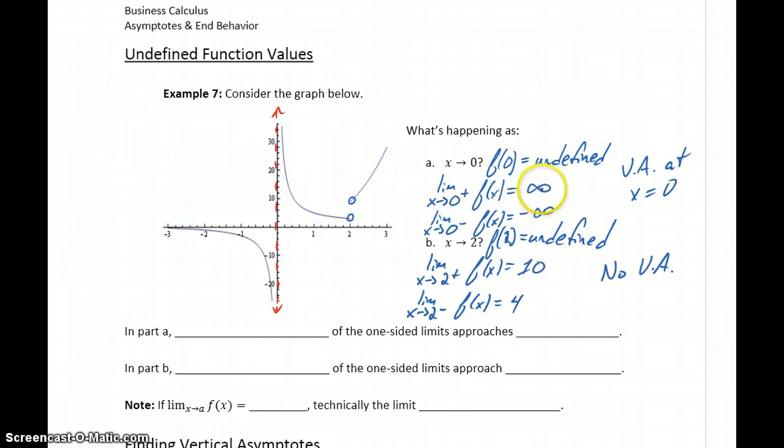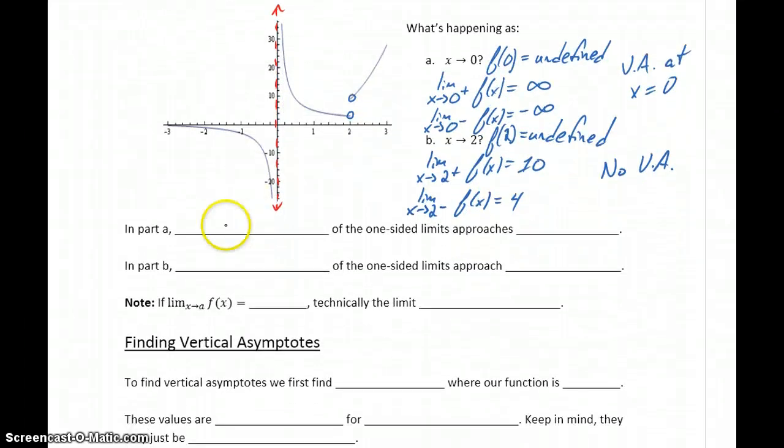The difference between these results is that we got values of infinity for these limits and real numbers for these values. So, in part A, if at least one of those one-sided limits is approaching positive or negative infinity, in part B, we have both of our one-sided limits approaching some number.